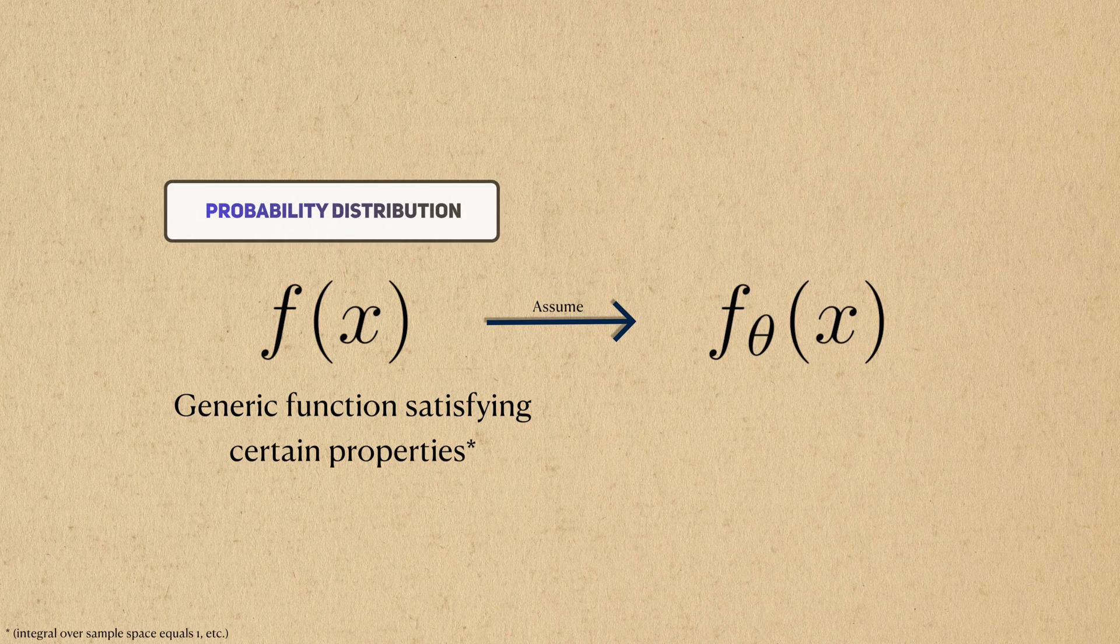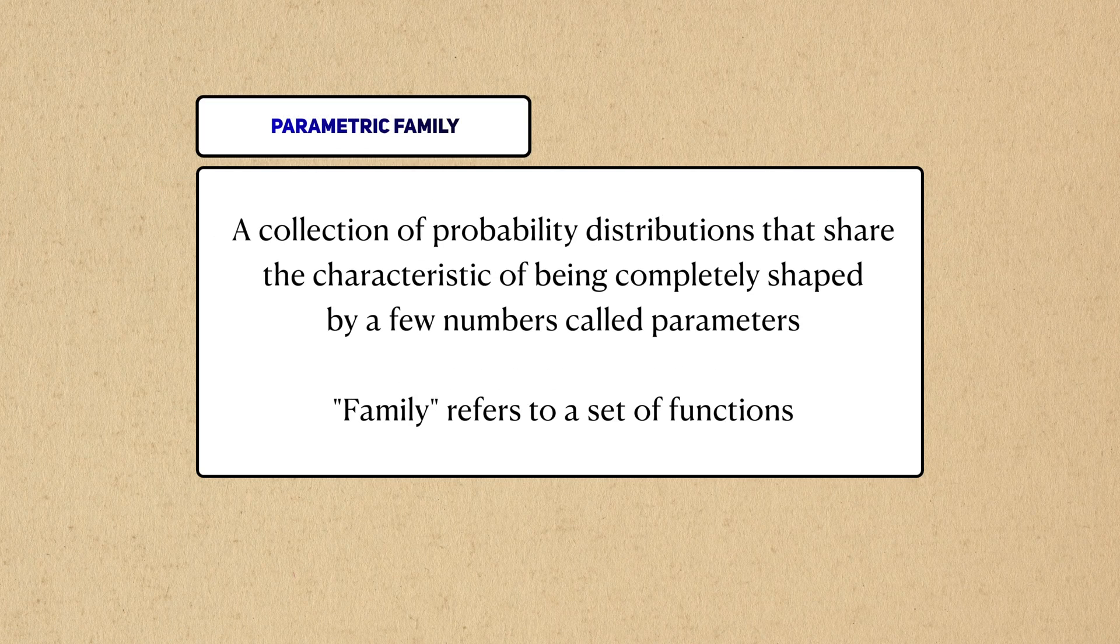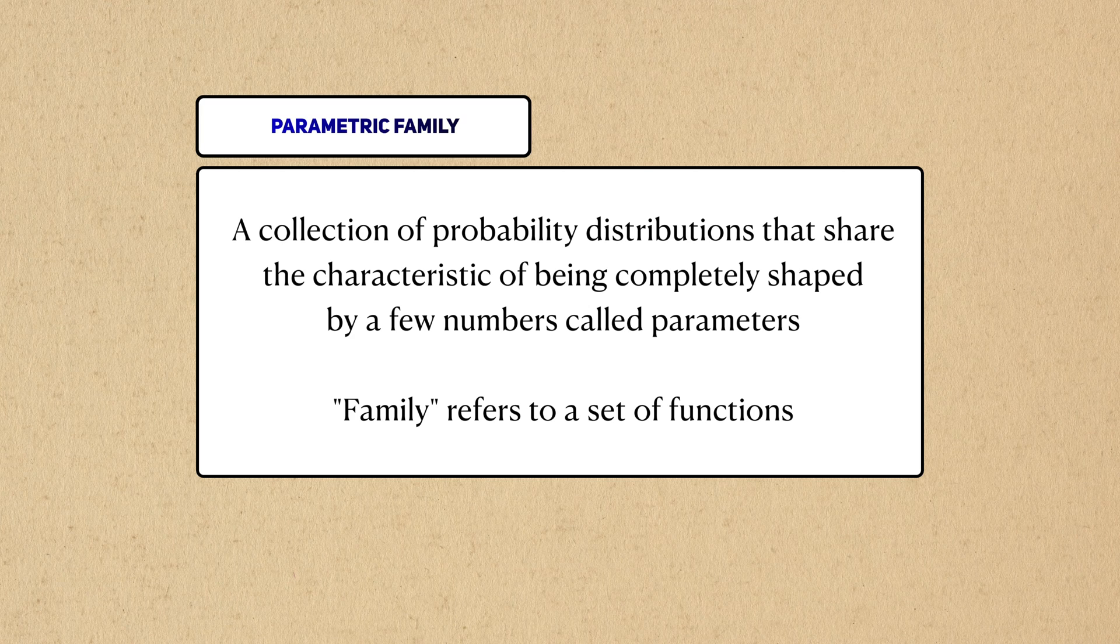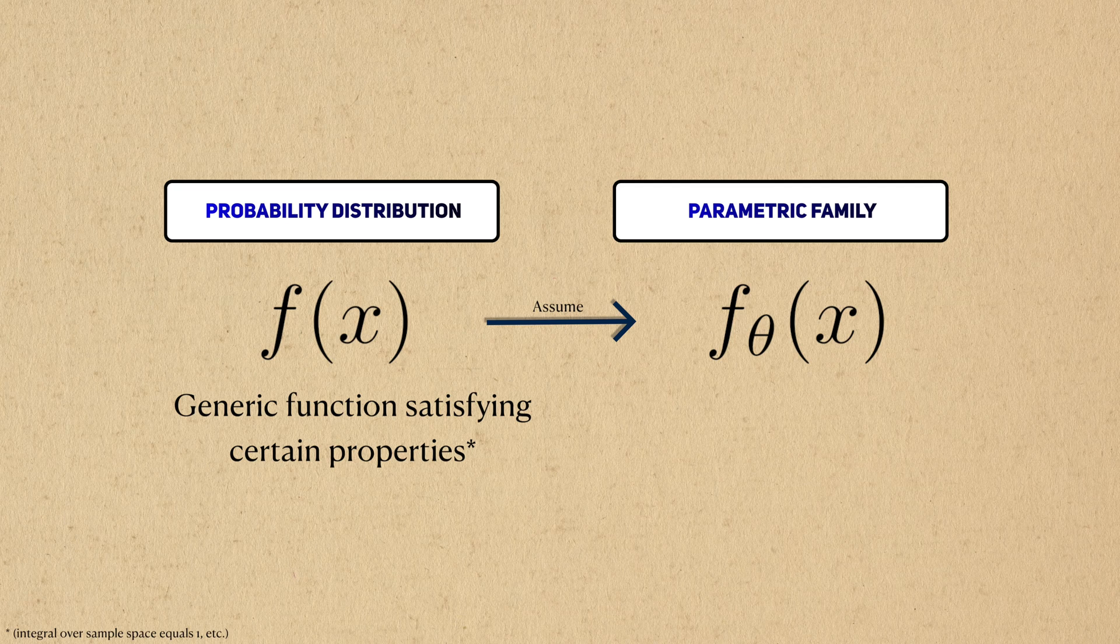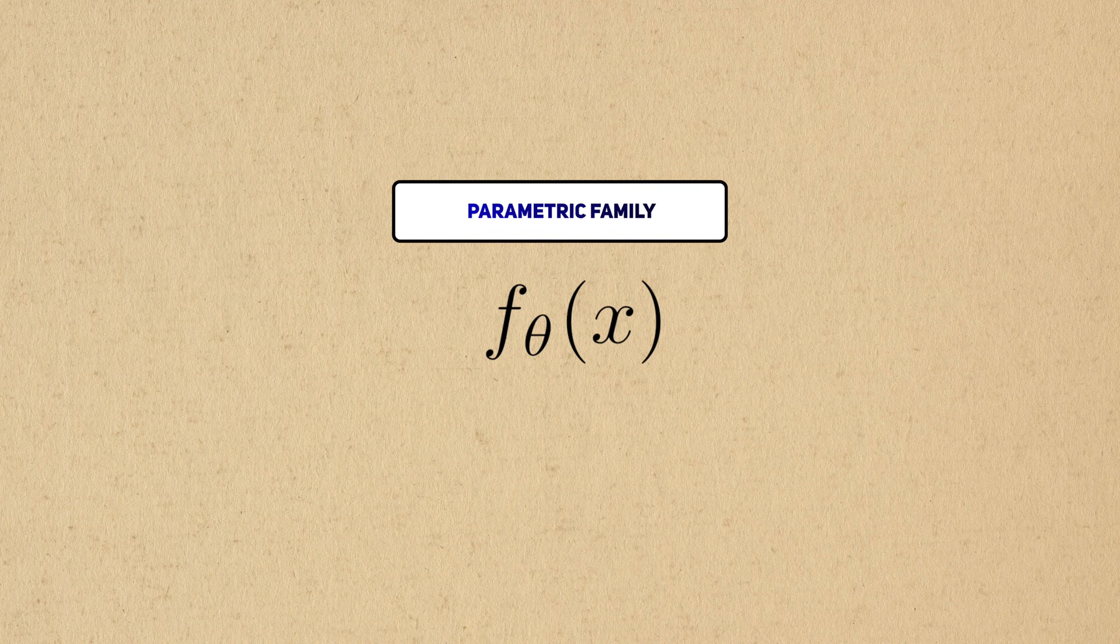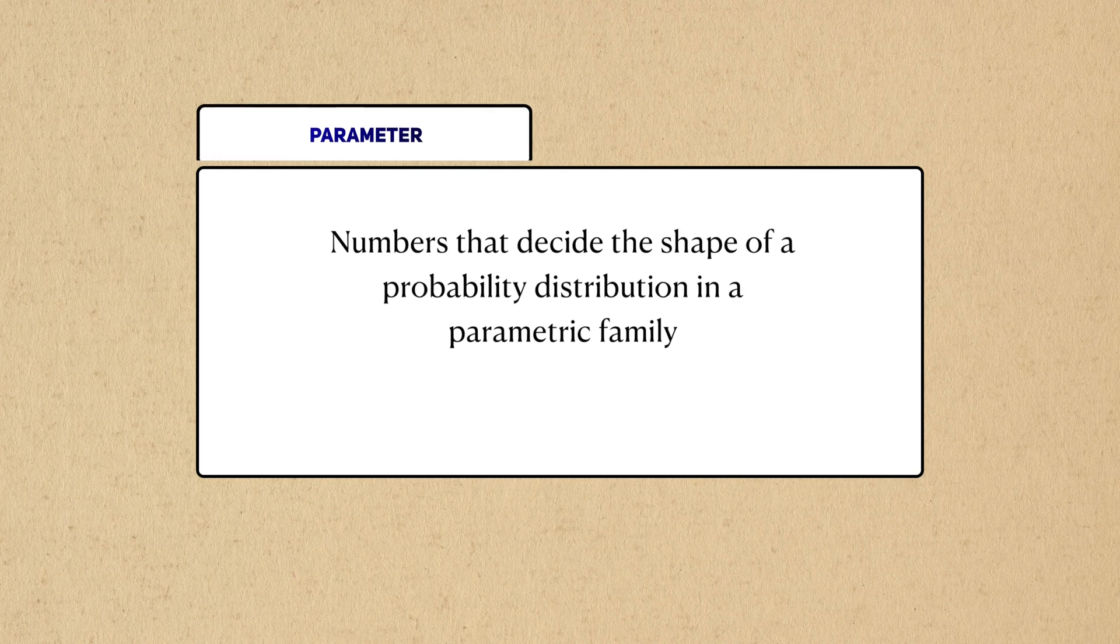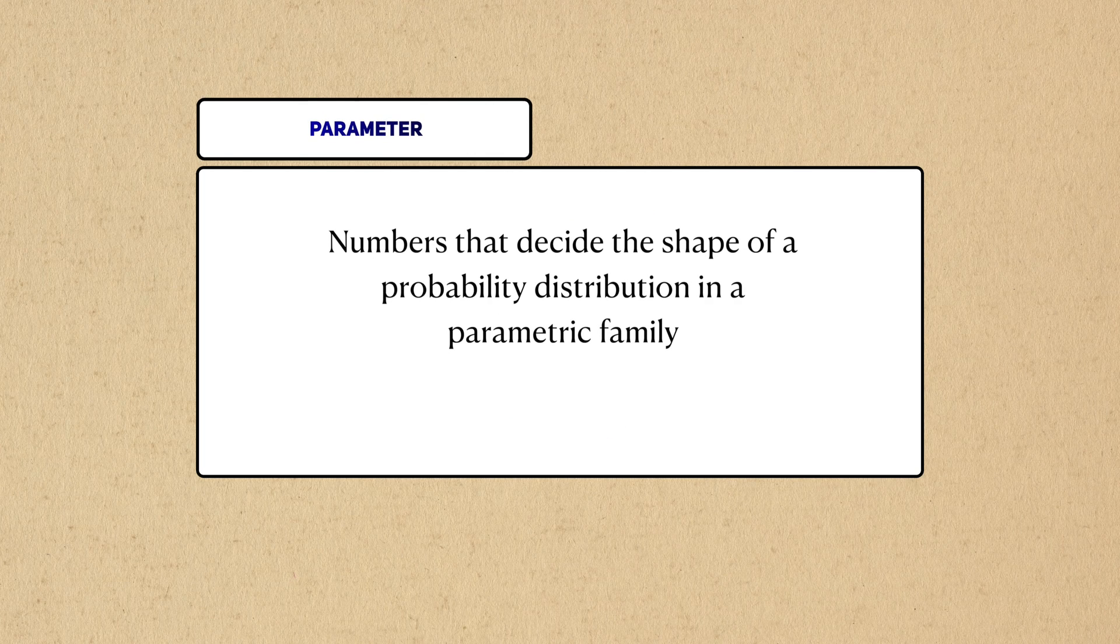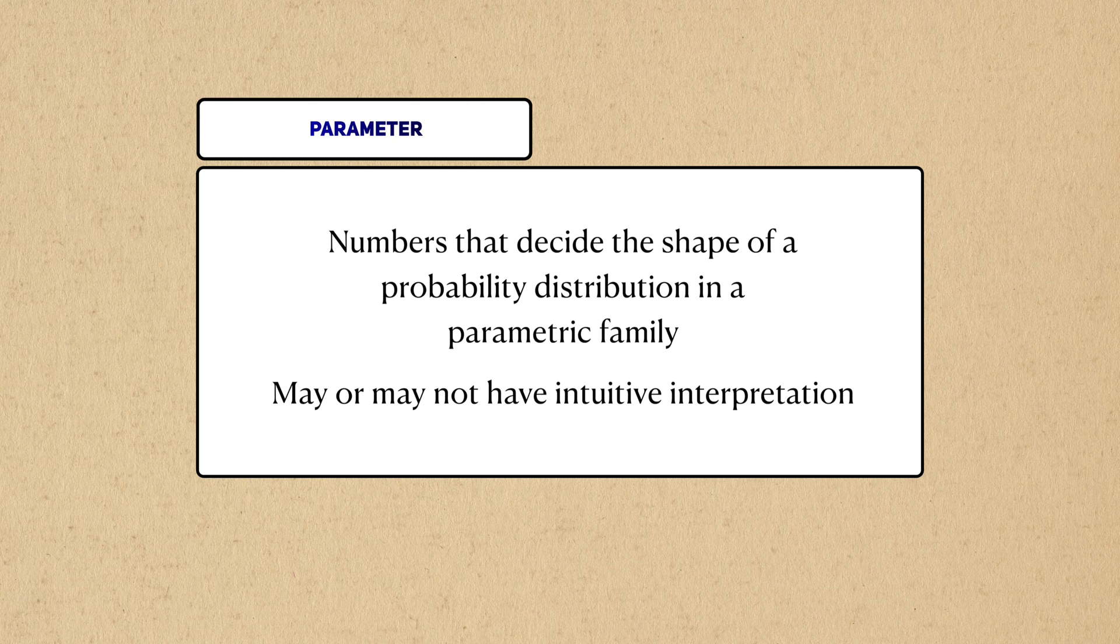Instead of assuming that the probability distribution is some generic function that satisfies certain properties, we'll assume it comes from what's called a parametric family. A parametric family in this context is a collection of probability distributions that share special characteristics. In notation, we usually depict the parametric family as f underscore theta, or p underscore theta. Like their name suggests, a parametric family of functions will have one or a few values called parameters. Parameters here are just numbers that decide the shape of the function, but they can also represent specific ideas, which we'll see more of later.